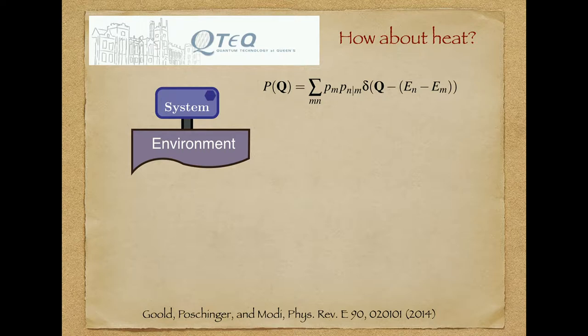You can reformulate the very same framework for work in terms of a new stochastic variable — heat this time. What these two systems exchange is energy, but in a different form, in an incoherent form: heat. You can define a probability distribution for heat that resembles very closely what we have seen for work. There are quite a few subtleties and differences that we need to go through.